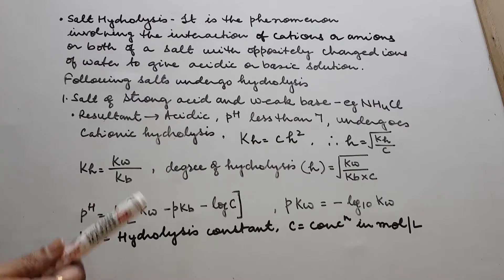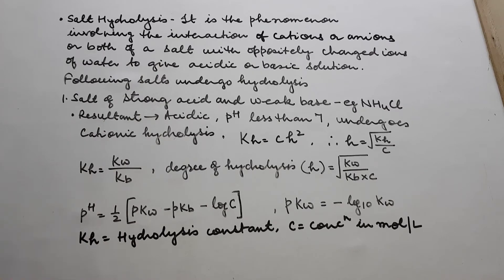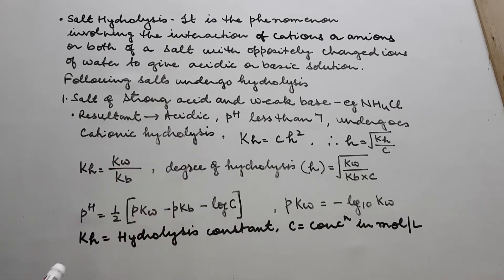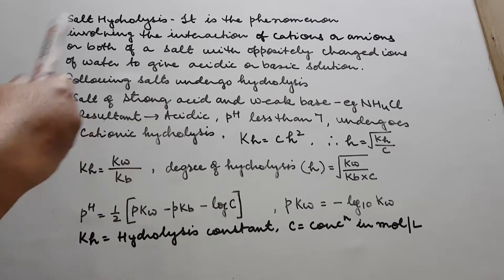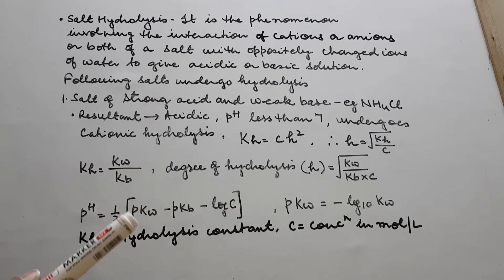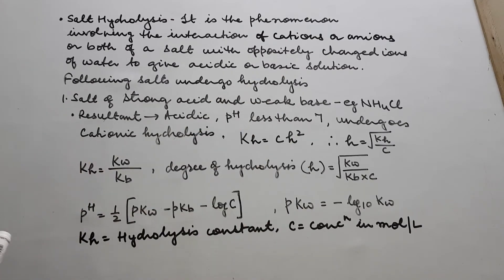They may ask you whether a salt like NH4Cl will undergo cationic hydrolysis, anionic hydrolysis, or both. The answer is cationic hydrolysis, because H⁺ ions are dominating in the solution.